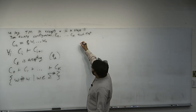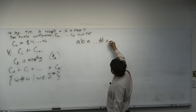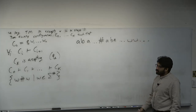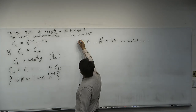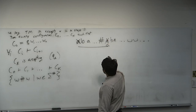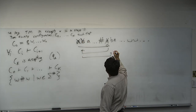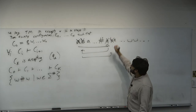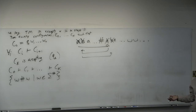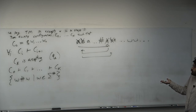Consider the tape with a b a # a b a followed by blanks. With pen and paper: remember the first symbol, cross it out, go past the hash, find the corresponding symbol, if it matches cross it out, reset to the beginning. Then remember the next symbol b, cross it out, go past the hash, find the first uncrossed symbol, cross it out, and continue. If anything doesn't match, reject.